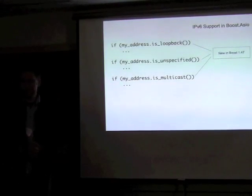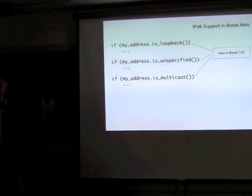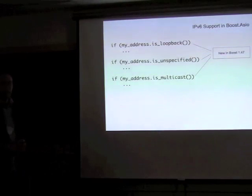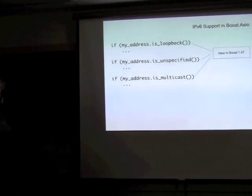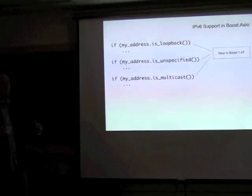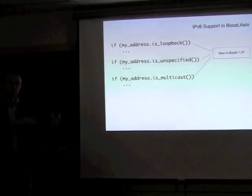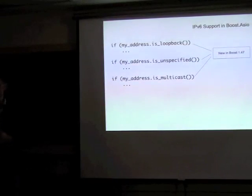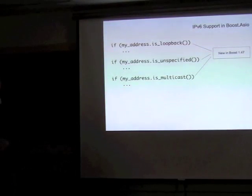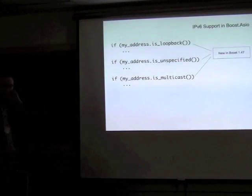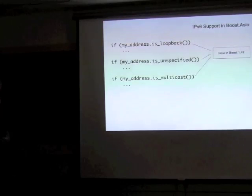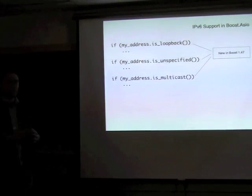There are also pseudo-constants for well-known addresses like loopback and the any address. On user request for Boost 1.47, new functions were added to the address class, because the concepts of loopback, unspecified (synonym for any), and multicast addresses apply equally to IPv4 and IPv6. These functions let you test whether an address is one of those types.